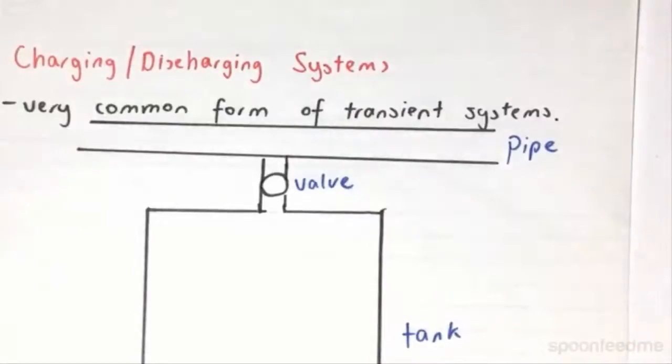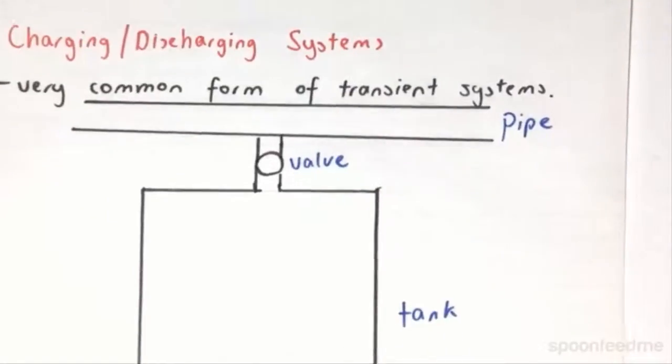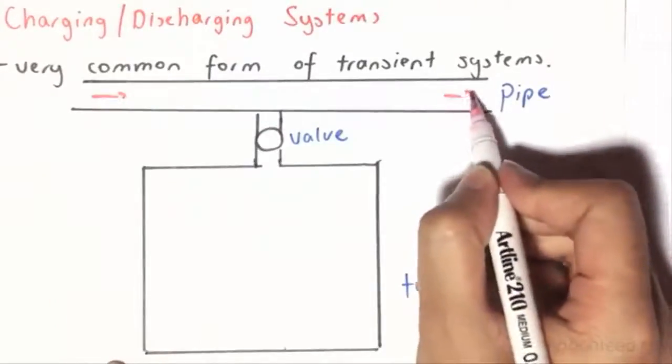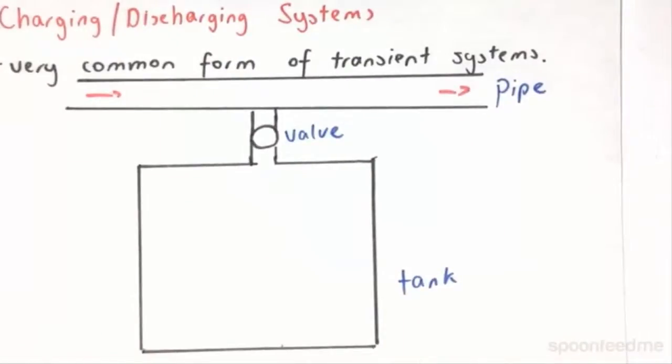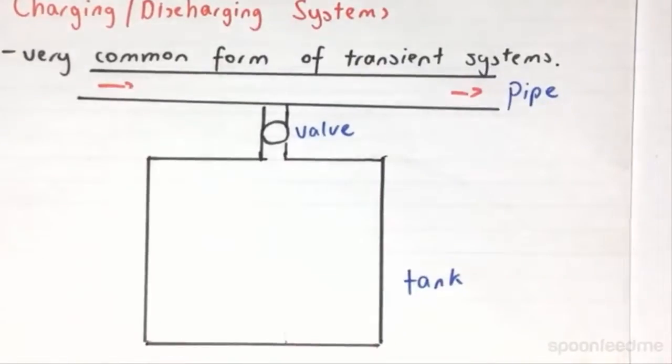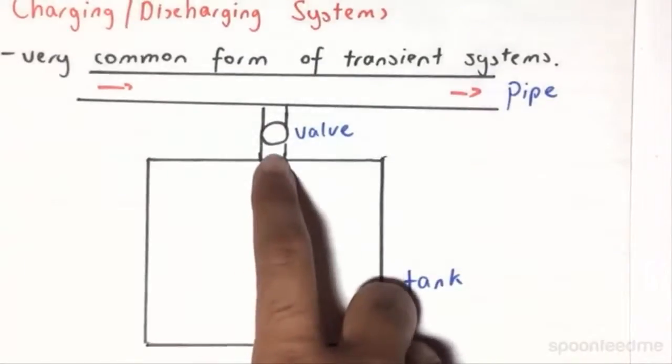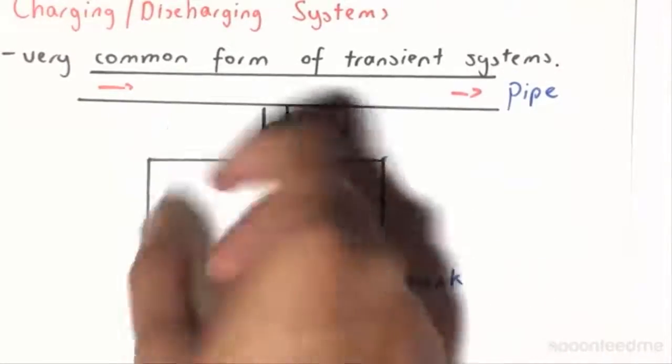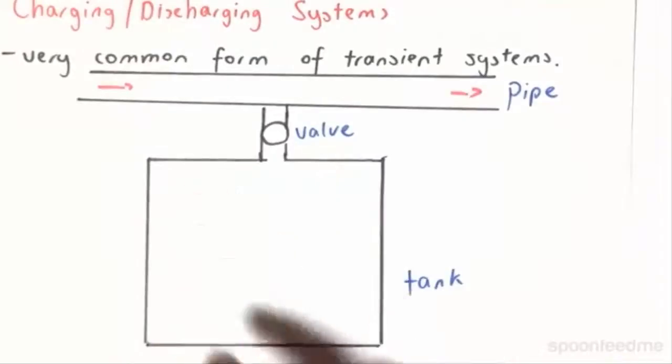So essentially, through this pipe that we have over here, there's going to be some sort of a steady flow of some fluid. And within this tank over here, we could either have nothing, or we could have a whole bunch of fluid within it. And the valve is just going to separate the two, and if we open the valve, then the two will be connected, and if we close the valve, then this system becomes closed.